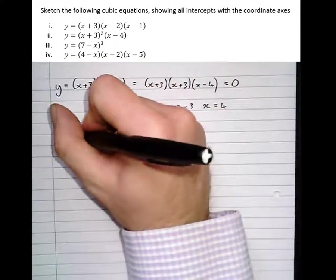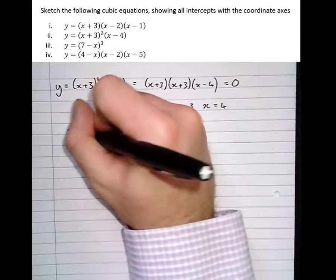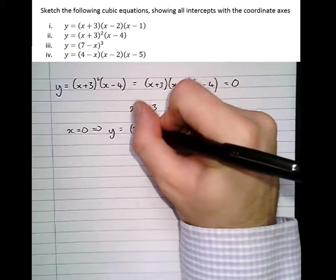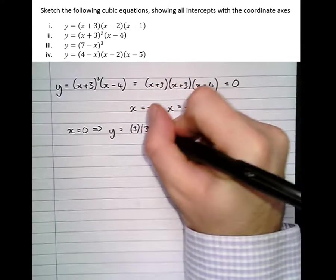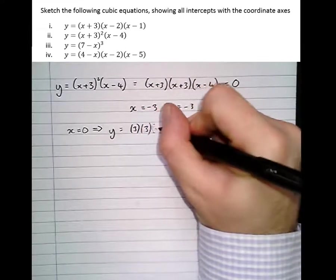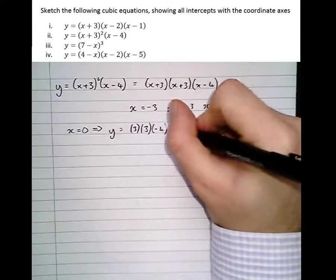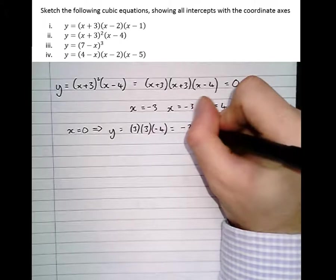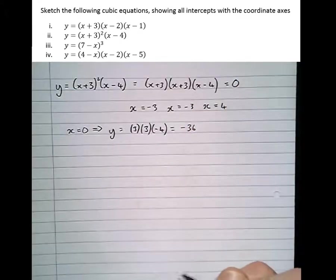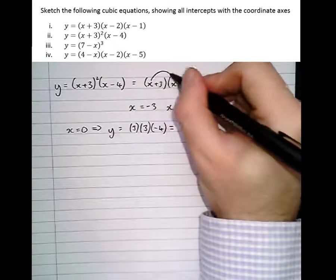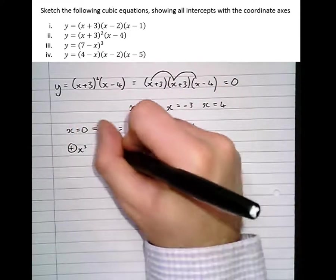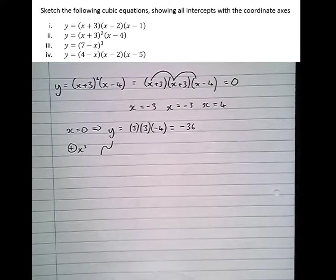The y-intercept when x equals 0, which means that y equals, 0 plus 3 is 3, 0 plus 3 is 3, and 0 minus 4 is minus 4. So 3 times 3 is 9, times minus 4 is minus 36, is our y-intercept. And timesing all the x's together, we see that we end up with a positive x cubed. So the shape is going to be something like that.